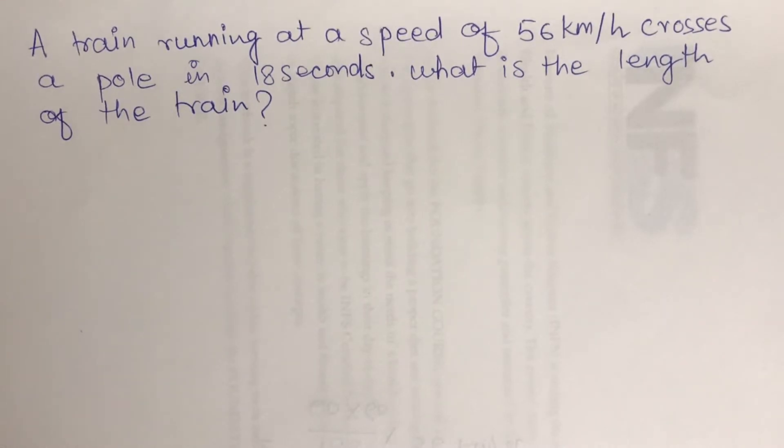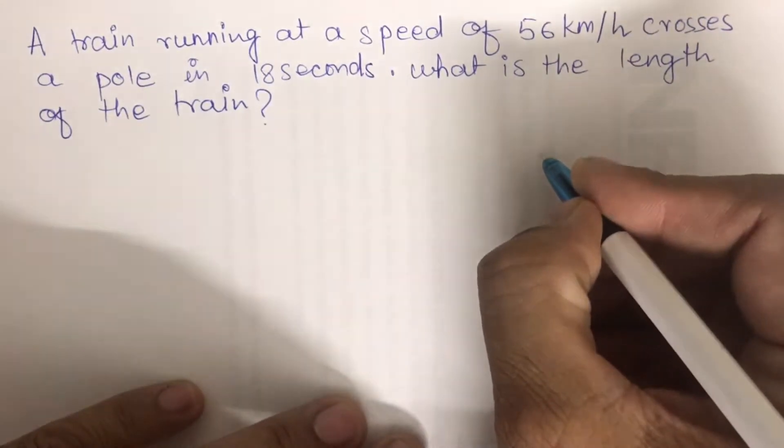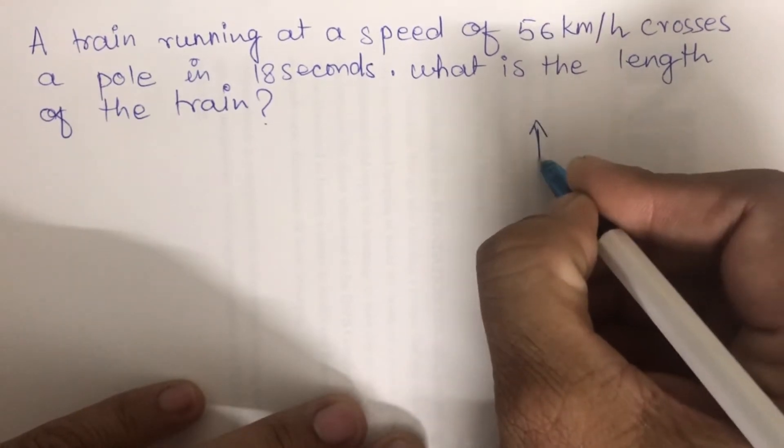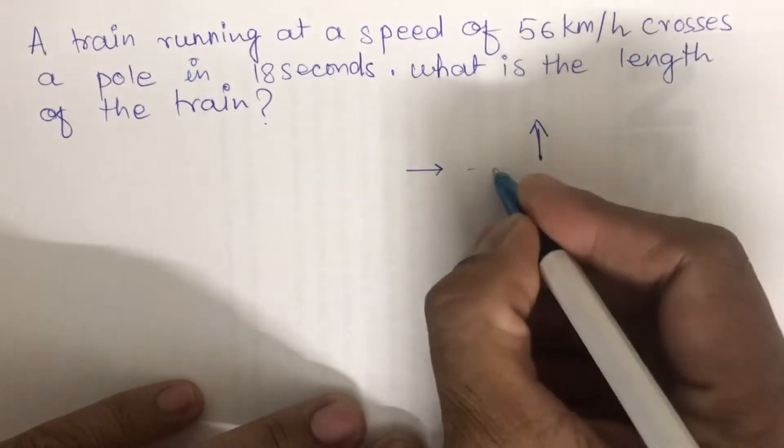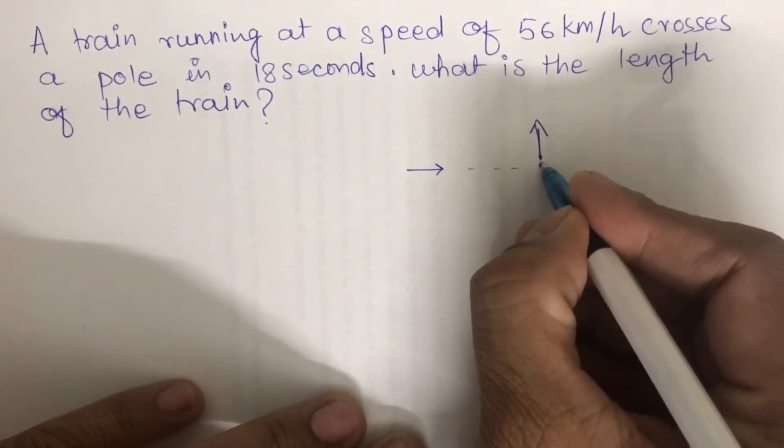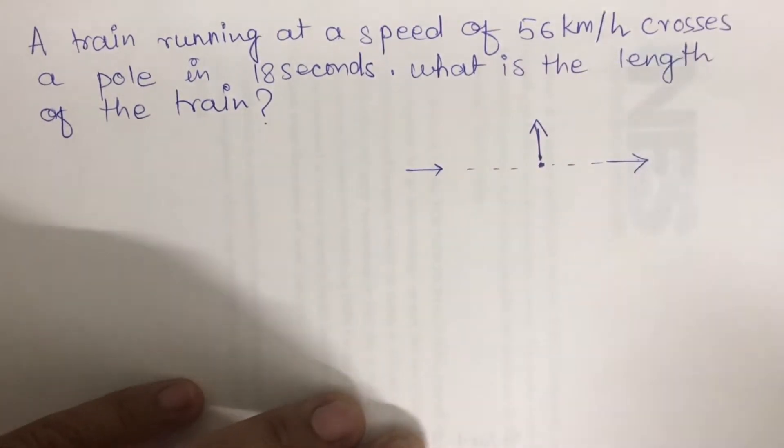This is one type of problem based on trains. In this question, the train is crossing a stationary object. Let's say this is a pole. The train is coming from this direction, coming to this point, and then crossing to the other side.